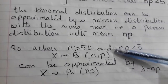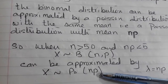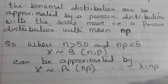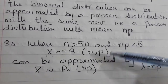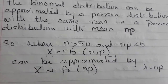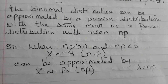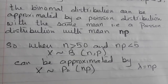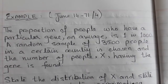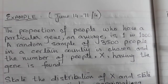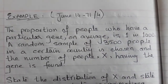The binomial distribution then takes the shape of the Poisson Distribution and is written accordingly. Writing distributions in the solution is very important — you will see in the marking scheme it sometimes carries one mark. Let's see the application of this concept with an example taken from June 2014, Variant 7.1, Question 4.